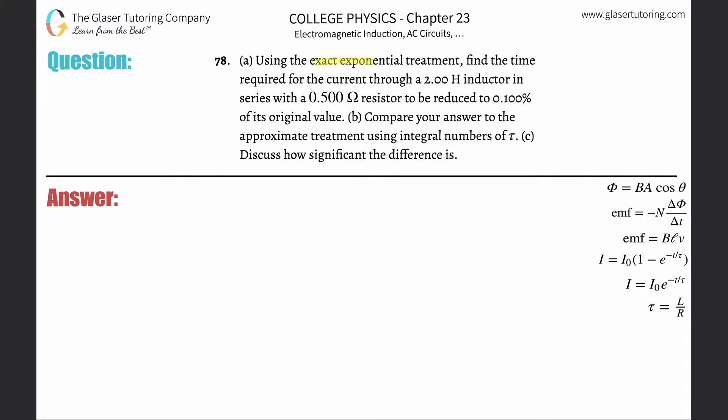Number 78, letter A. Using the exact exponential treatment, find the time required for the current through a 2 henry inductor in series with a 0.5 ohm resistor to be reduced to 0.1 percent of its original value.